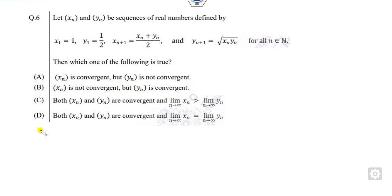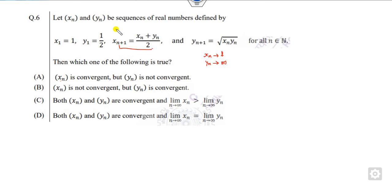Look at the next question. You have to check whether the series x_n is convergent or y_n is convergent, and if they are convergent, what are the limits? Firstly, let me check what the limits are — either the limit of x is greater than here or not. Assume the limit x_n converges to l and y_n converges to m. So you can substitute here: l equals l plus m upon 2, which shows that l equals m. So one option is cancelled.